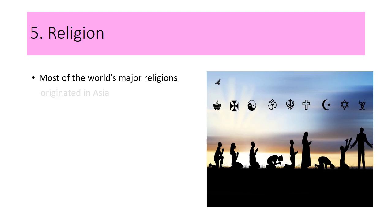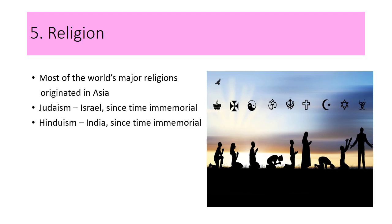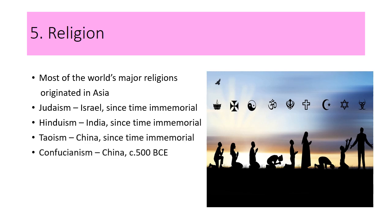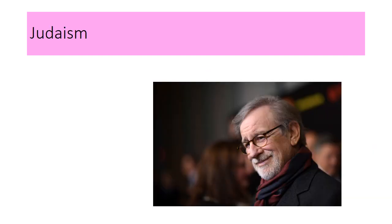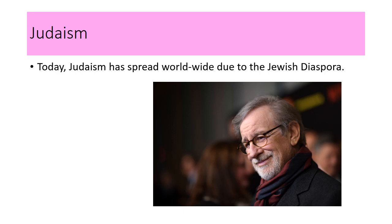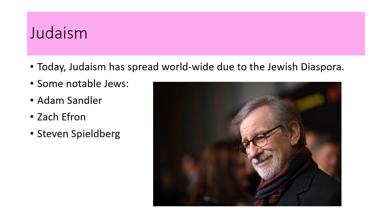Most of the world's religions originated in Asia. You have Judaism, Hinduism, Taoism, Confucianism, and Buddhism. Judaism originated in Israel. Hinduism had its origins in India. China had Taoism and Confucianism. And India gave birth to Buddhism. While Israel also had Christianity back in the first century, and Islam in the Arabic Peninsula. Today, Judaism has spread worldwide due to the Jewish diaspora. Some notable Jews we know are Adam Sandler, Zac Efron, Steven Spielberg, and Albert Einstein.